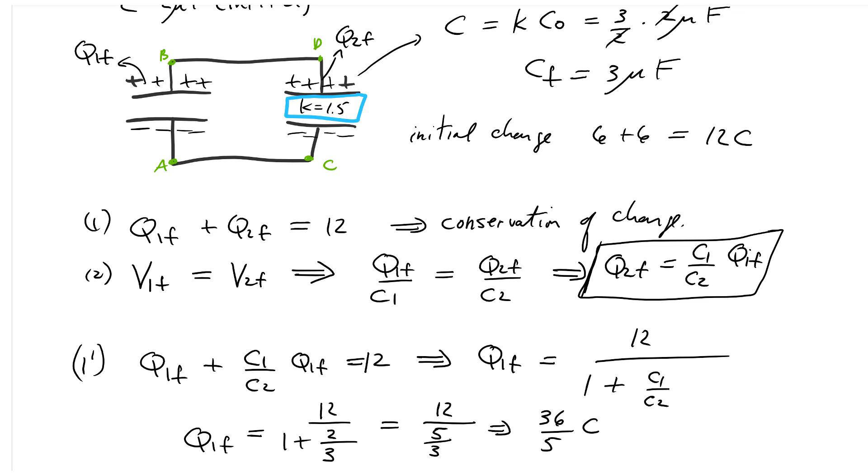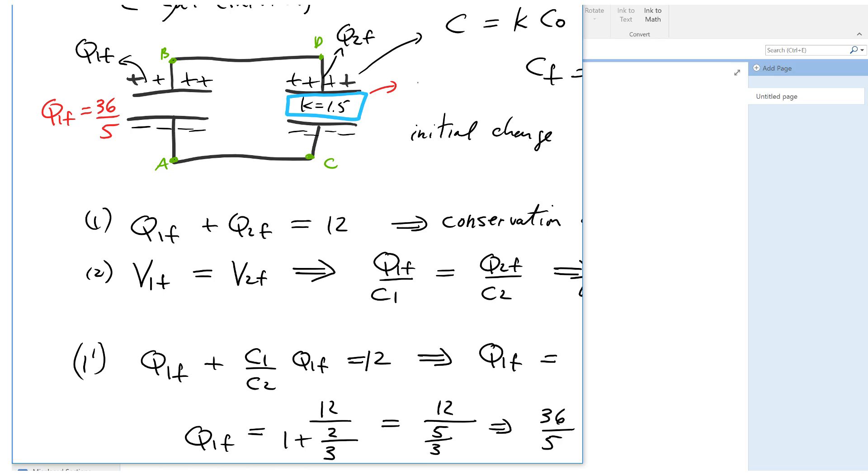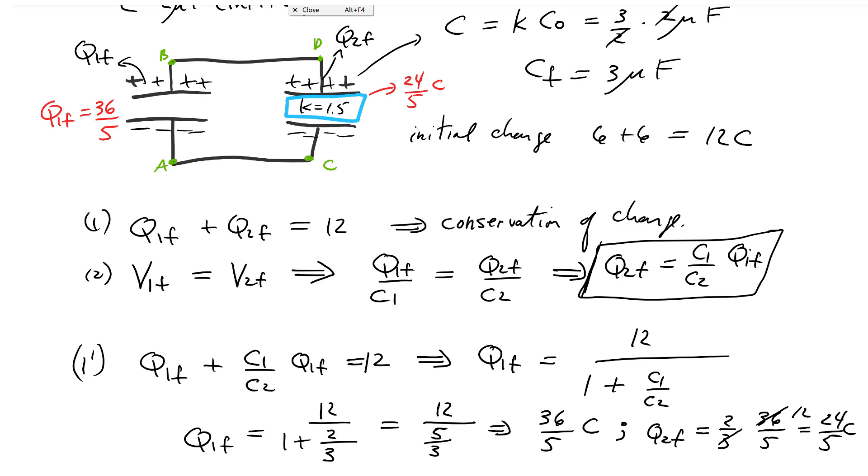Knowing that, you should be able to calculate the charge on the right-hand side. Q₂f, I just go back to my equation, it's simply 2/3 of 36/5, multiply and cancel, I'm left with 24/5 coulombs. So I can fill that in: Q₁f is 36/5 and Q₂f is 24/5. And that's all you have folks. There's the problem of two capacitors where I've inserted a dielectric in one side.